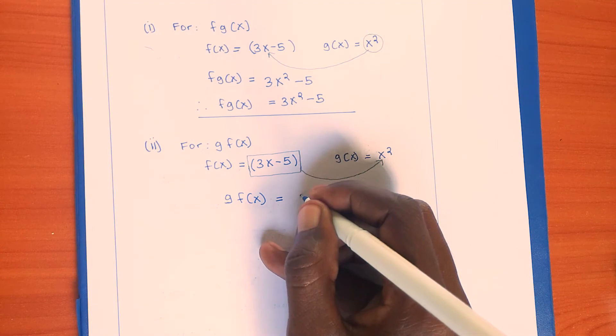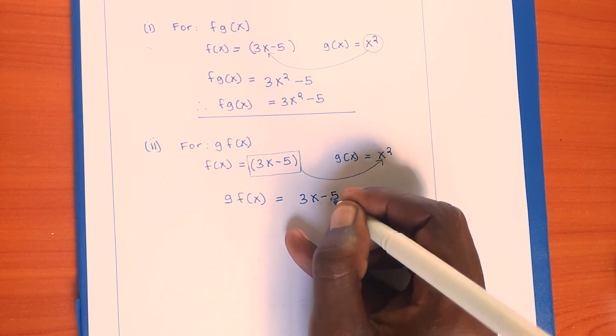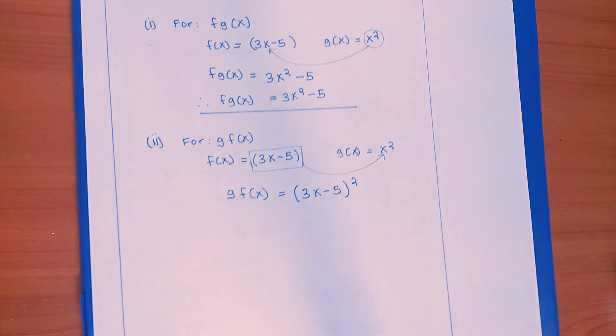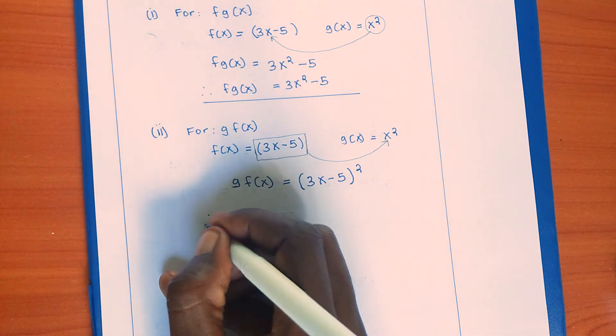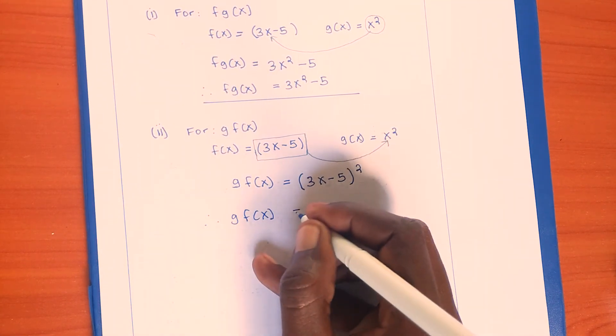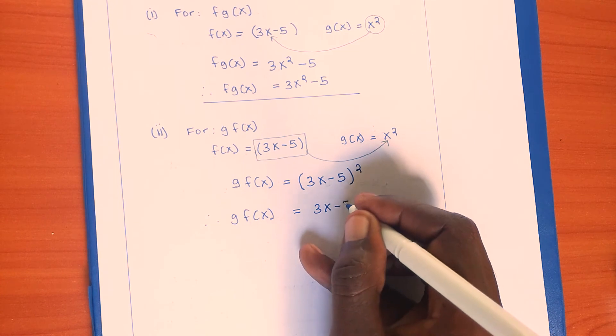gf(x) will be 3x - 5, and then we put the square. Therefore, gf(x) will give us (3x - 5)².